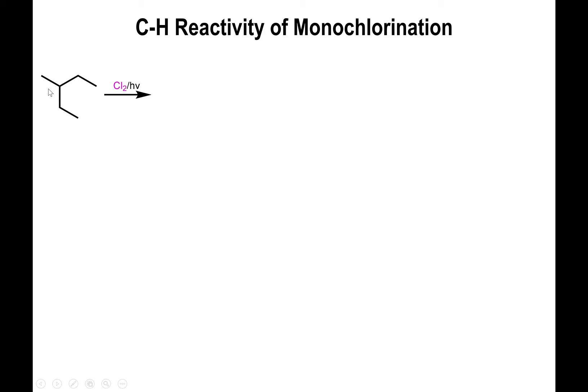From that point of view, all we have to worry about is determining how many different kinds of carbons bearing hydrogens are in the molecule. Looking at this molecule, there are four unique carbons. The CH2 groups are equivalent because both are connected to a CH group and a methyl group on the other end. Similarly, the CH3 groups on the right are equivalent to each other. So there are only four different kinds of carbons that bear hydrogens.